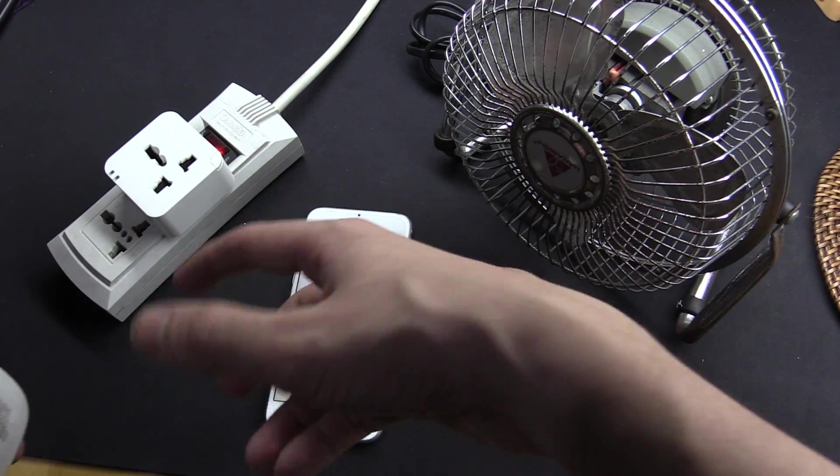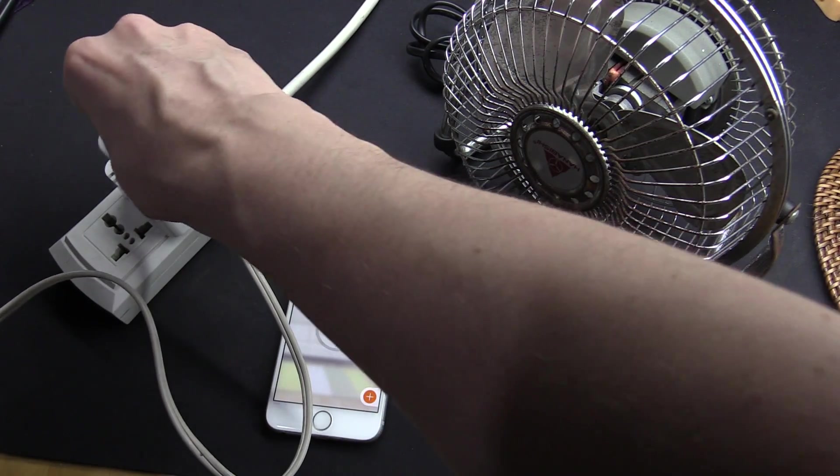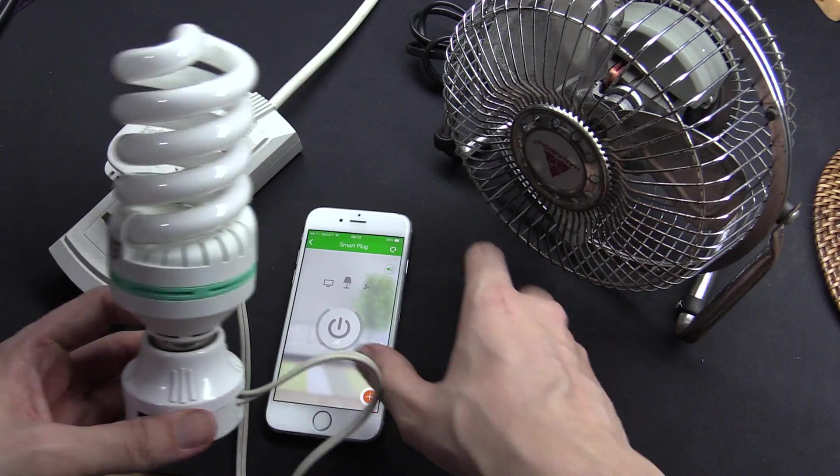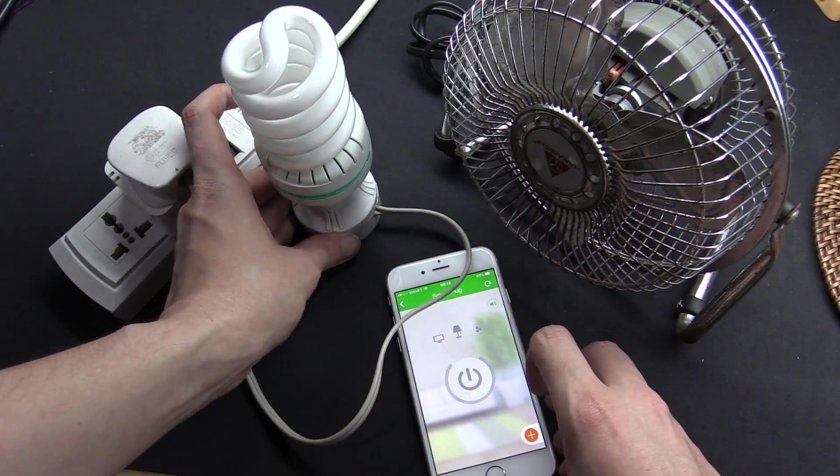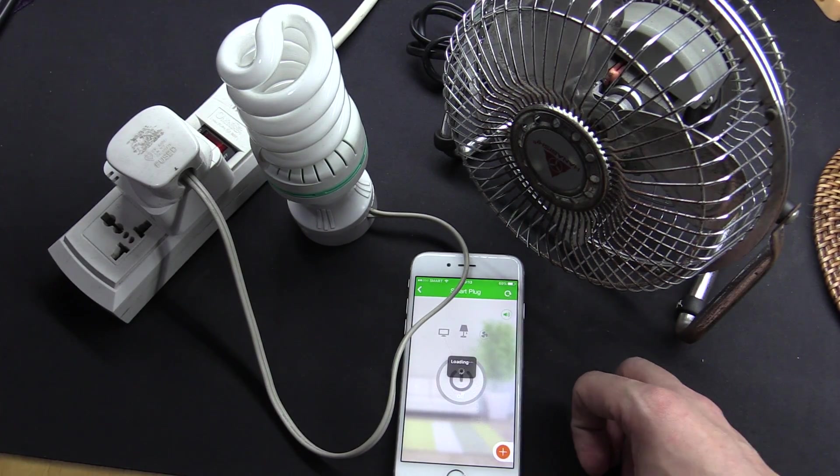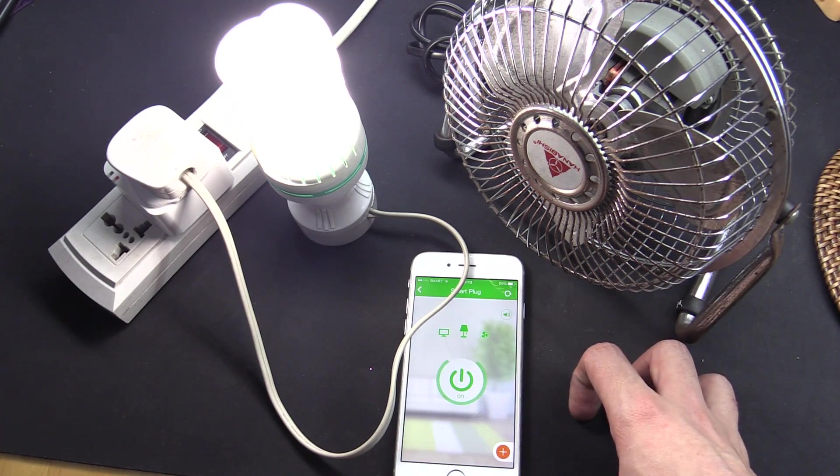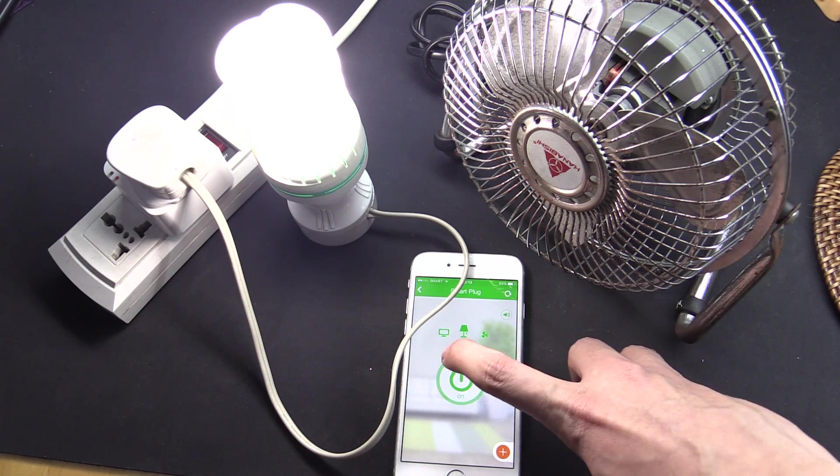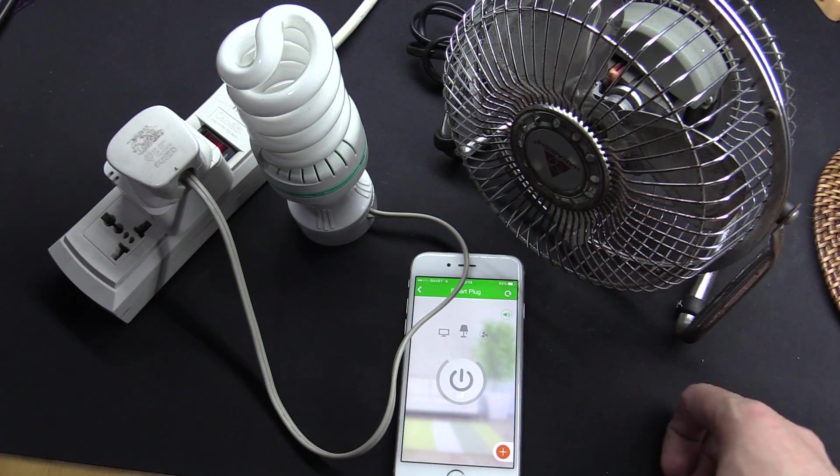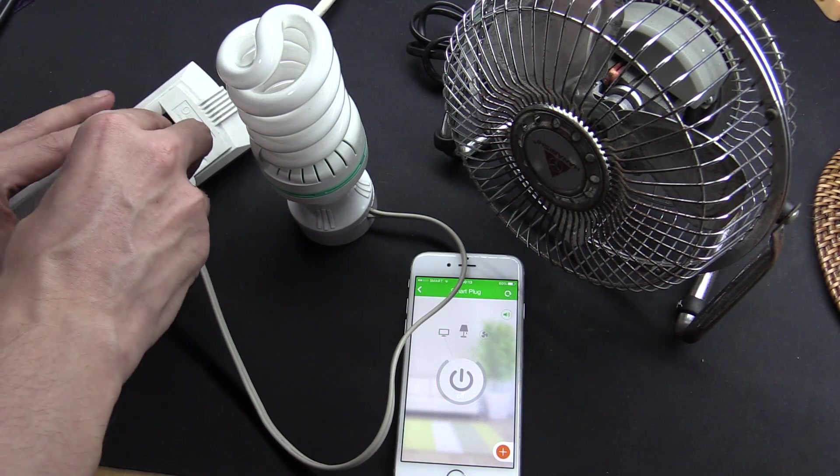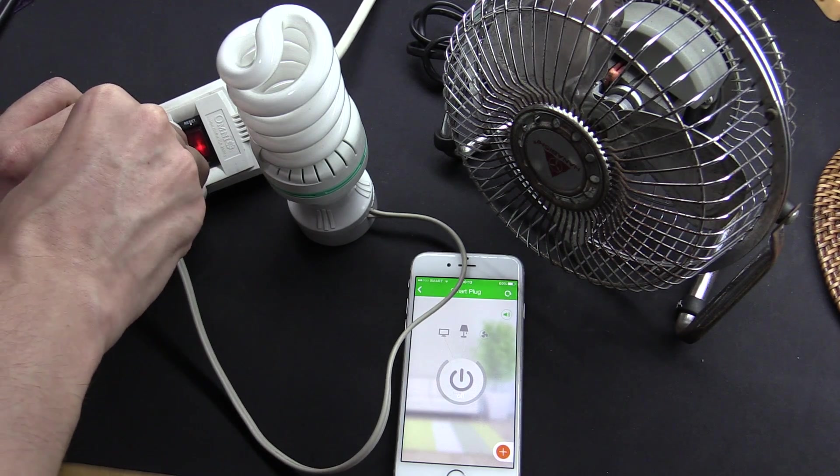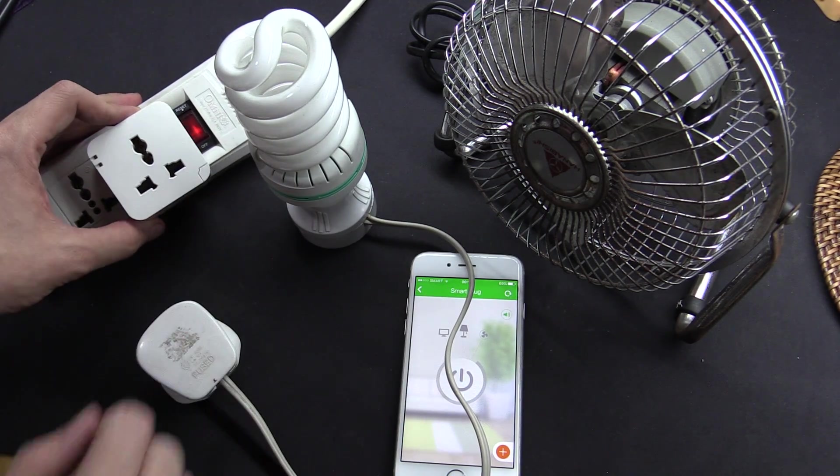Now, of course, it doesn't have to be an AC fan. It can be anything that plugs into the socket. So I'm going to plug in this CFL light bulb just as another example, and then we'll switch it on. And you can see it comes on. Maybe one second lag or one second delay. It's really pretty real time. Turn it off. Off. And, of course, you could even connect an extension lead to this to break it out into multiple sockets instead of just having one socket.